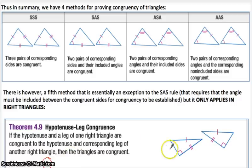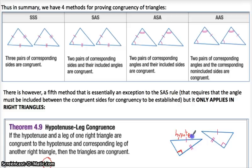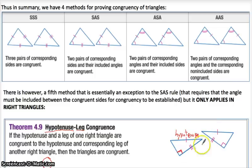Why is it called HL? In triangles that have a right angle, we name one side particularly — the one opposite the right angle — as the hypotenuse. The hypotenuse is special because it's the side opposite the right angle. If we have the hypotenuse in one right triangle congruent to the hypotenuse of another right triangle, and also some other side — the other sides of a right triangle are called legs — all we need is a hypotenuse and a leg, and that's enough to prove congruence.